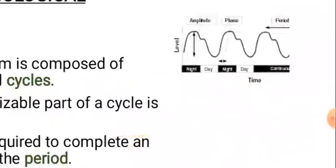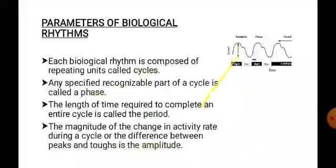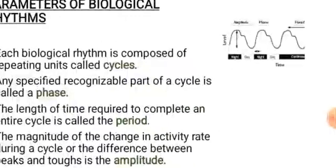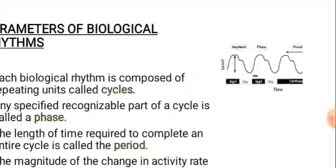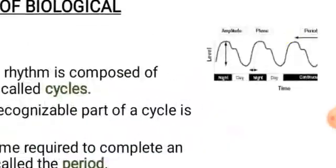The third parameter is a period — the time required to complete a cycle is called the period. The fourth parameter of biological rhythm is amplitude. Amplitude is the rate of change of activity during a cycle, and we measure the amplitude from the rest position to the trough position — that is, from the mean position to the extreme position.